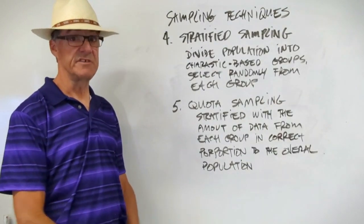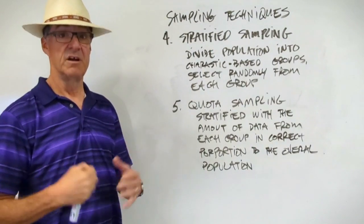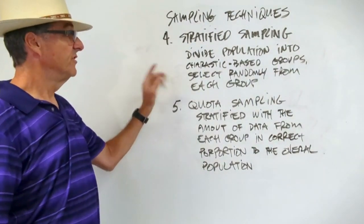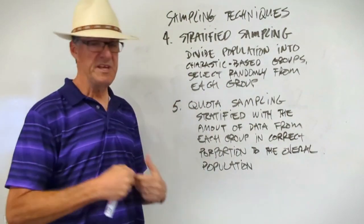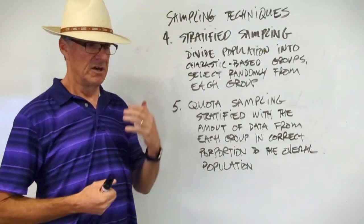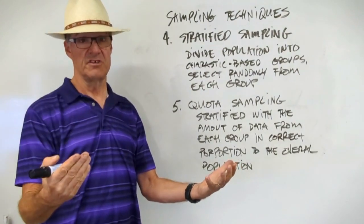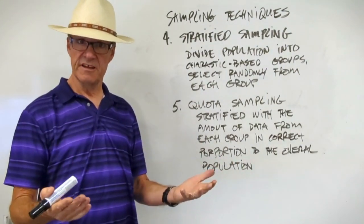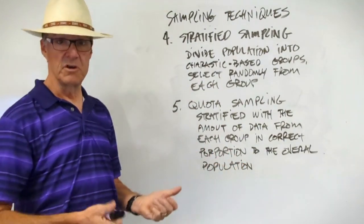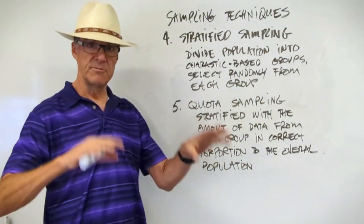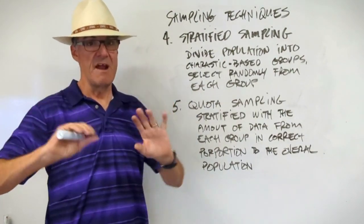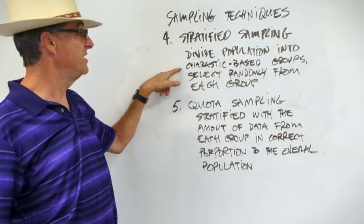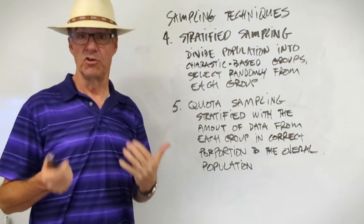Let's take a look at two more techniques that are getting better and better as we go down this list. So stratified sampling. This would be divide the population into groups based on characteristics like college-educated, not college-educated, male, female, things like that, urban, rural. So you're starting to think about getting a representative amount of data from every possible grouping. So we're dividing population to characteristic-based groups and then selecting randomly from each group.